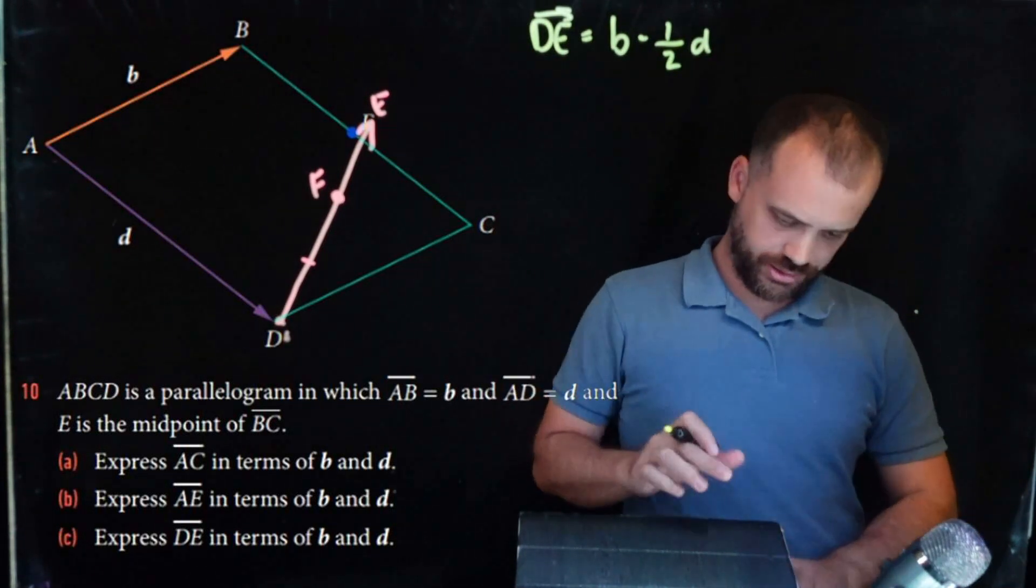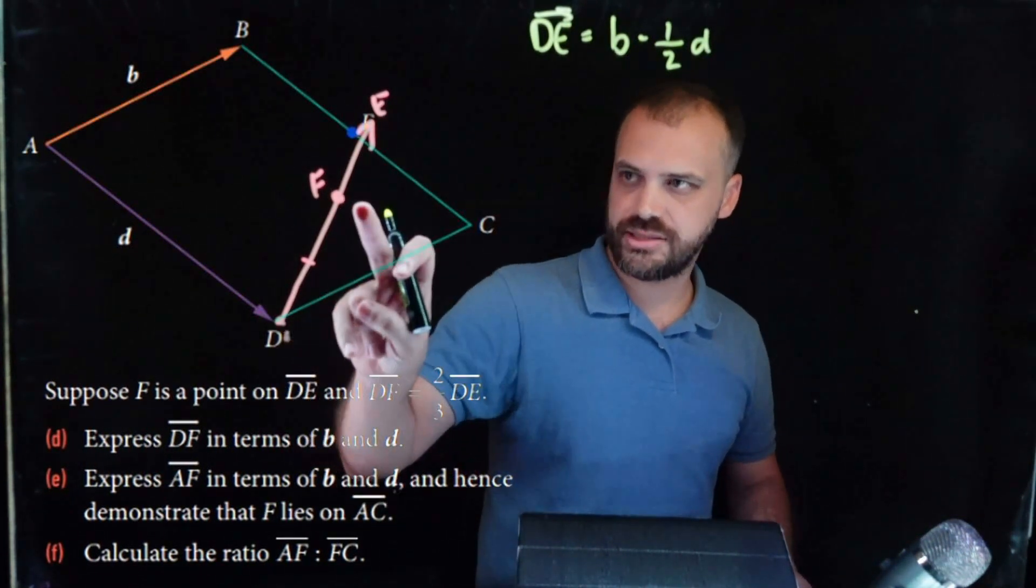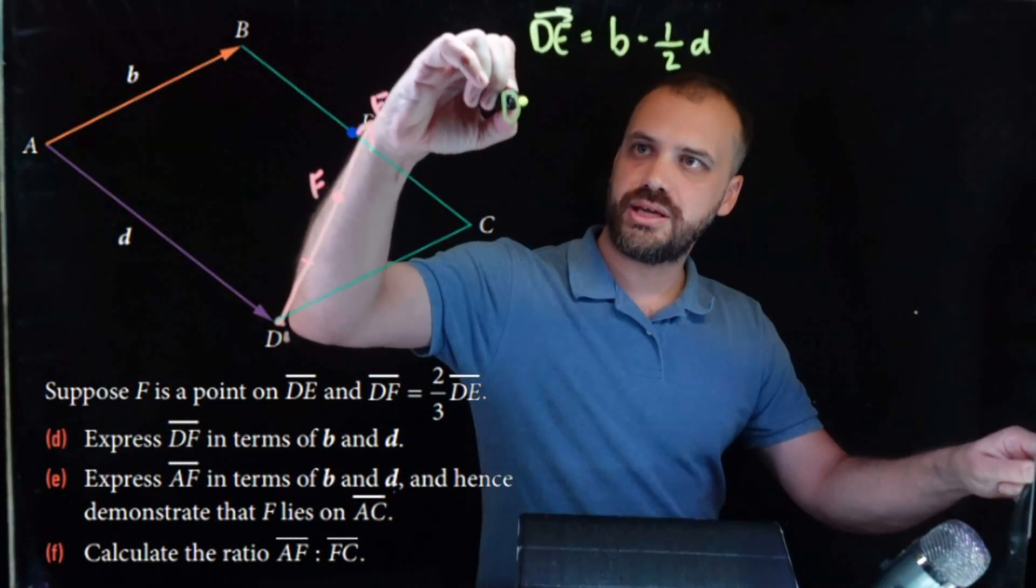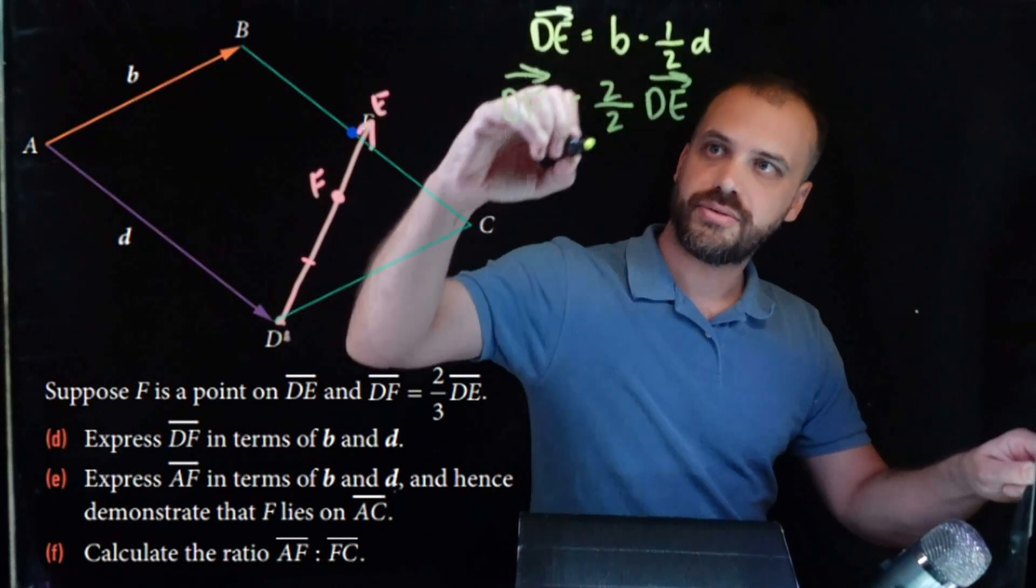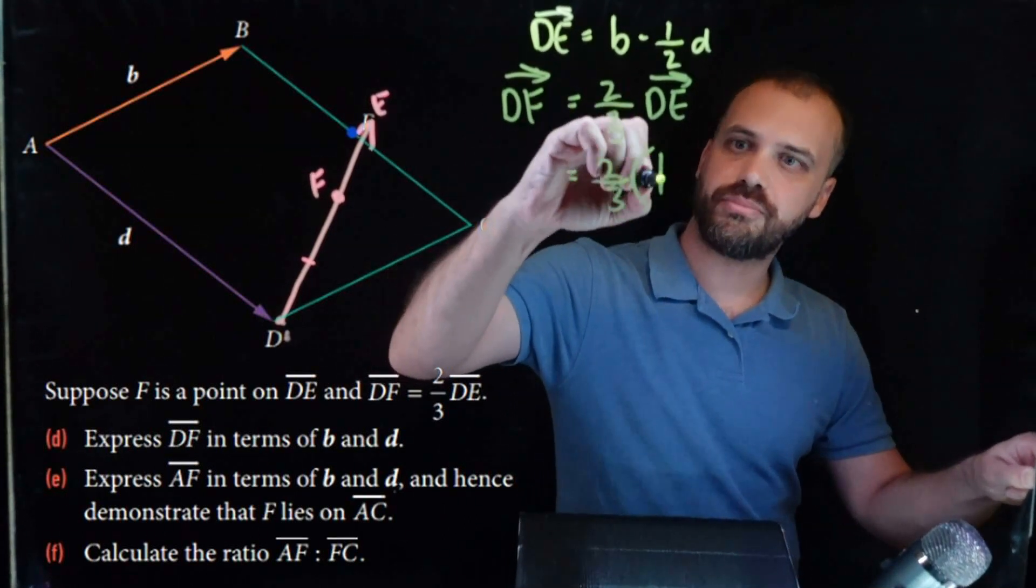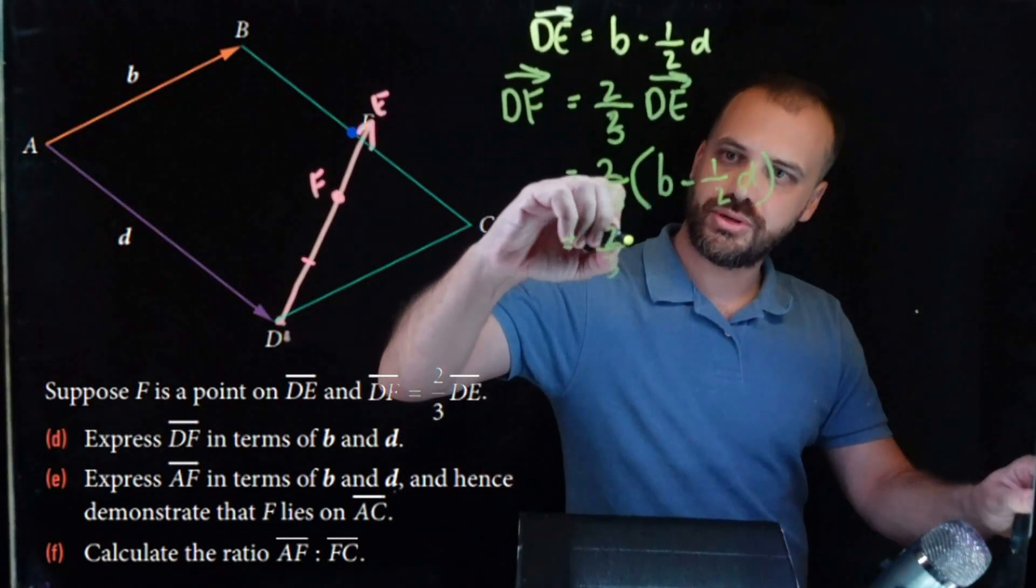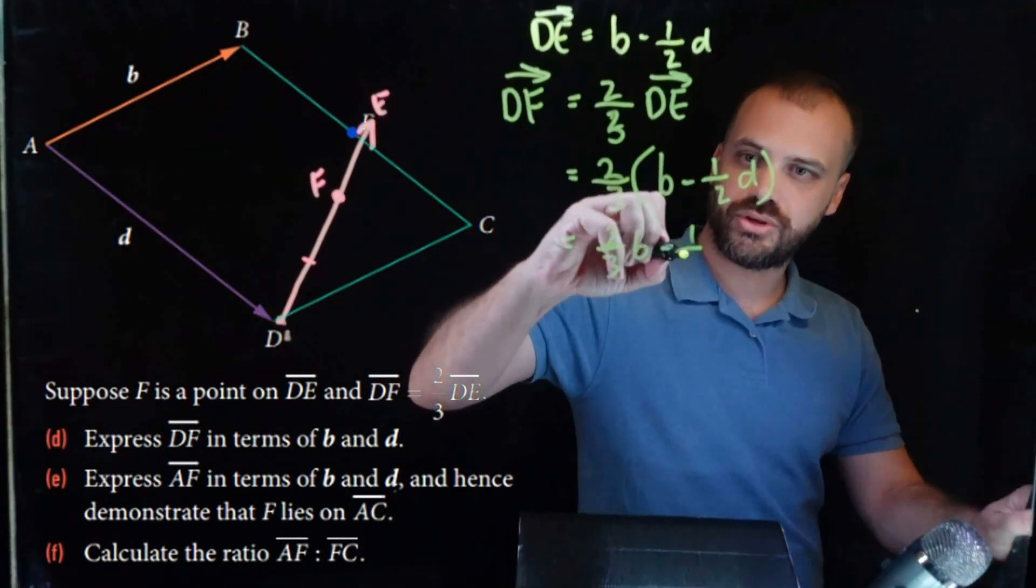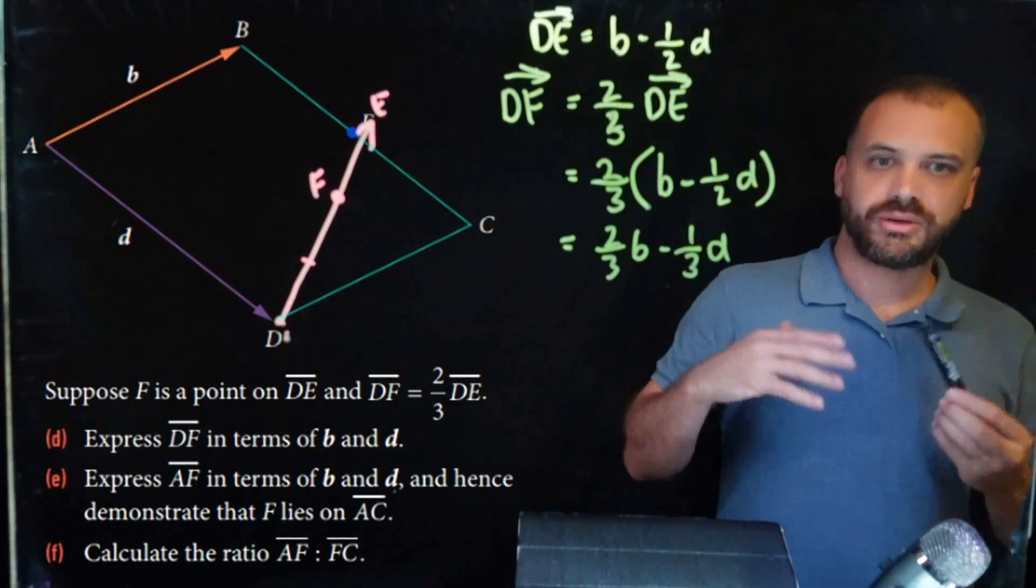Now, that means, when we roll forward now, that if we want to find DF, there's D, there's F, if we want to find DF, we're just finding two-thirds of this. So DF equals two-thirds of DE, which is equal to two-thirds of B minus half D. That's equal to two-thirds B minus two-thirds times a half is one-third D. Both of these are good answers. I don't know which one the textbook does, but I like them both.